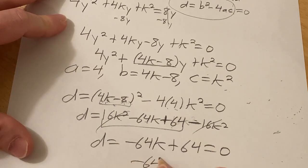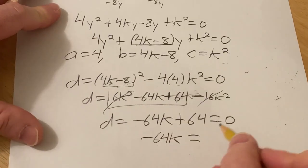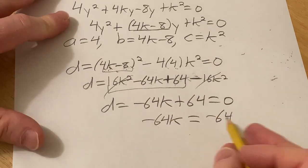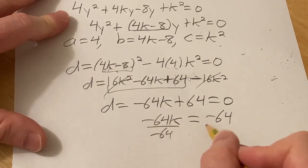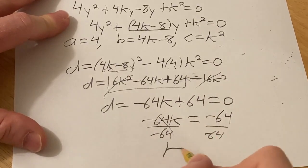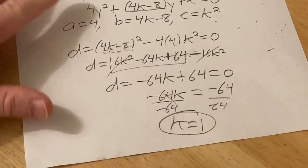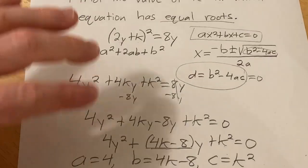So we can subtract 64, and then divide by -64, so we get k equals 1.